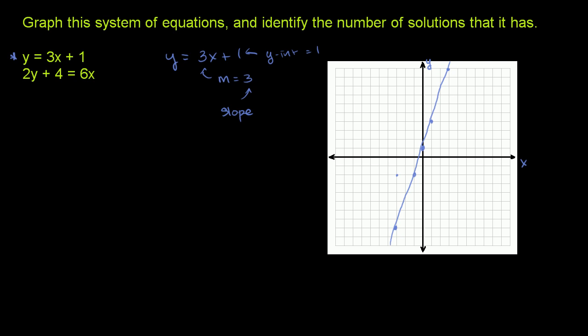So let me do the second one now. So it's written in standard form right now. 2y plus 4 is equal to 6x. We want to get this in slope-intercept form. y is equal to mx plus b. So a good place to start could be to subtract this 4 from both sides. So let's subtract 4 from both sides of this equation. The left-hand side, we're left with just a 2y. And then the right-hand side becomes 6x minus 4. So 2y is equal to 6x minus 4.